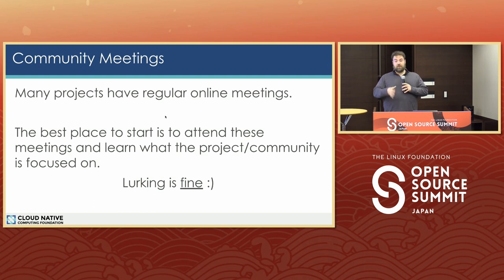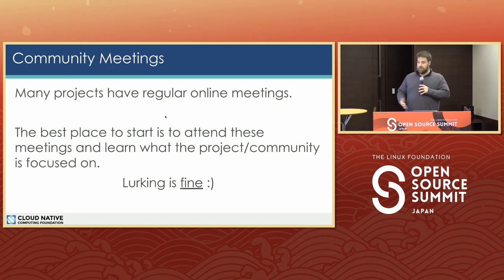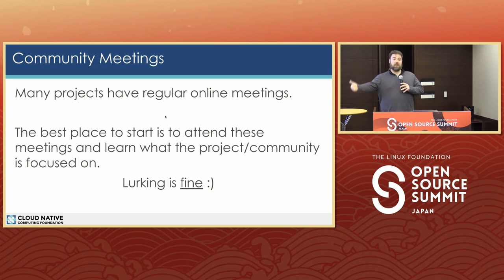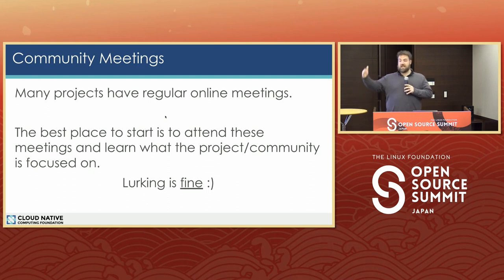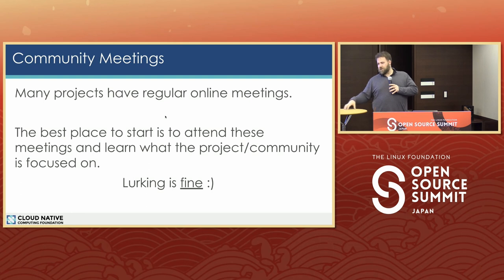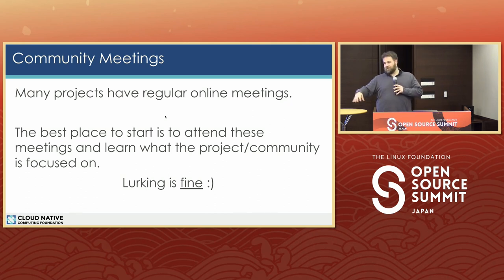Most community meetings will say at the beginning, 'Is there anyone new?' You can introduce yourself if you want; if not, that's fine — you can just stay muted, camera off, and just listen to what they're talking about. This is extremely helpful if you're trying to figure out what this project is really trying to focus on. If you as a prospective contributor join the Longhorn meeting thinking you want to improve how the CSI driver works with Kubernetes, but find out there are three other things on fire, it probably doesn't make sense to contribute to that change they're not focused on. Maybe there's something you can do to help the existing maintainers instead. Lurking is a really good idea to start embedding yourself in the community.